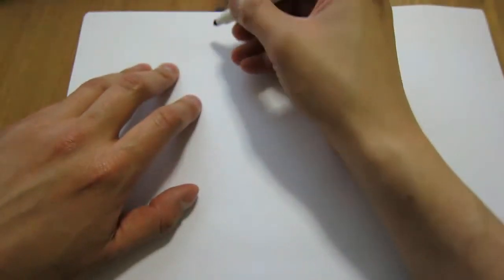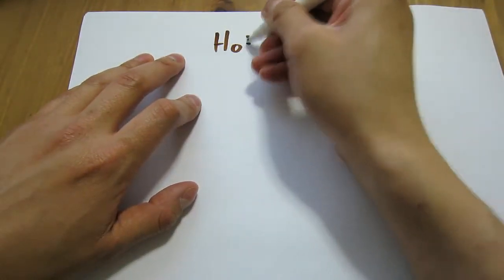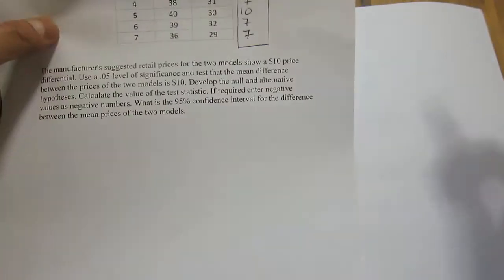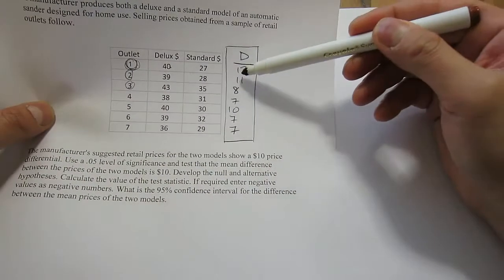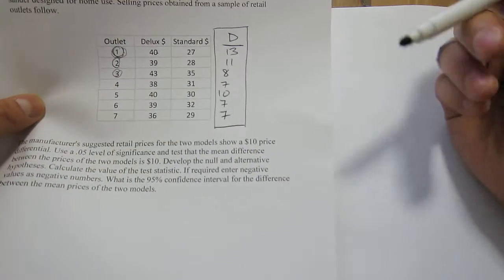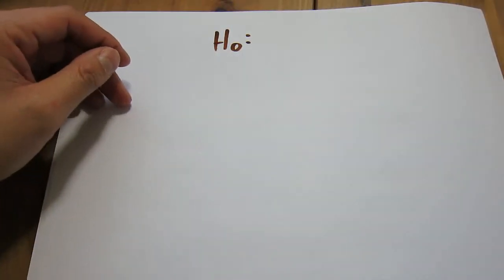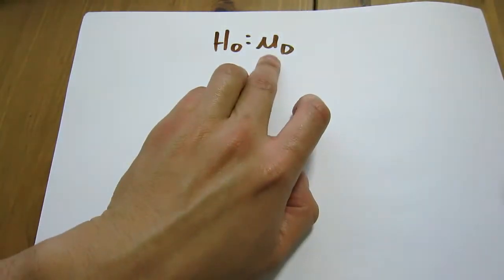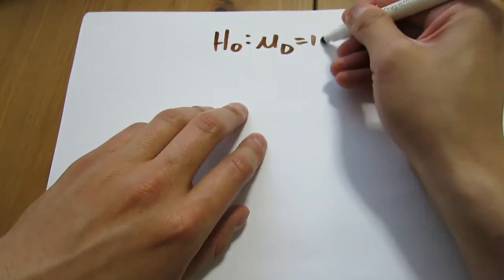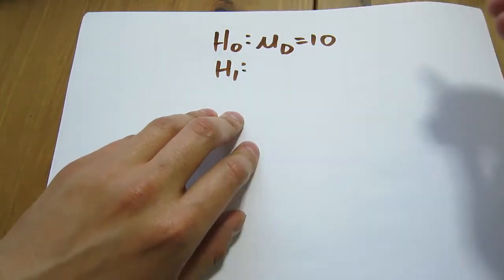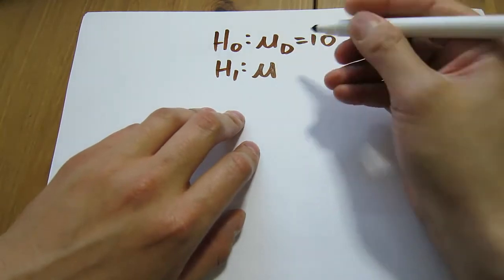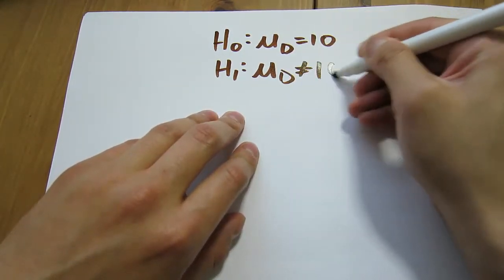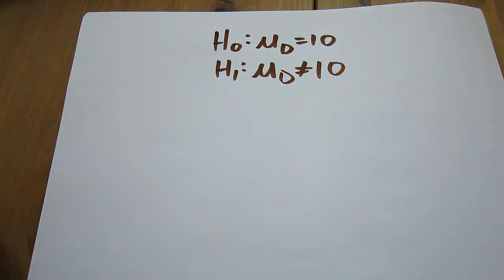The first thing we have to do is set up the null and alternate hypotheses. We want to test whether the mean difference is equal to 10 or not — we're testing whether the difference in the two models is equal to $10. So the null hypothesis is: mu_d equals 10, meaning the average of those differences equals 10. The alternate hypothesis is that the average of those differences is not equal to 10.